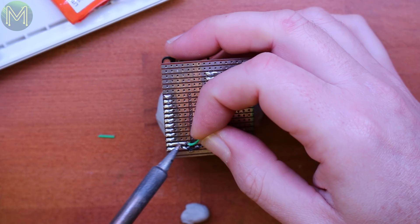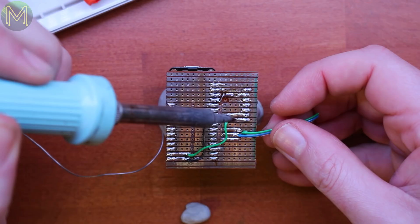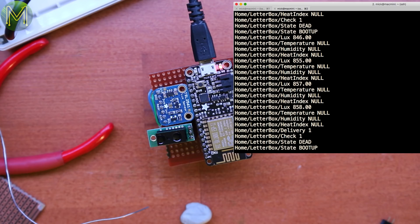Next onto the distance sensor. First power and then ground. Then the signal wire from the sensor to GPIO pin 14 of the ESP. In my code I refer to this as the deliver pin. Testing again showed that it was all functional.